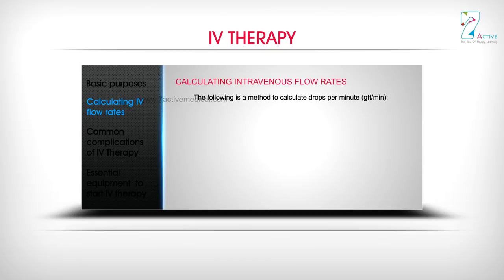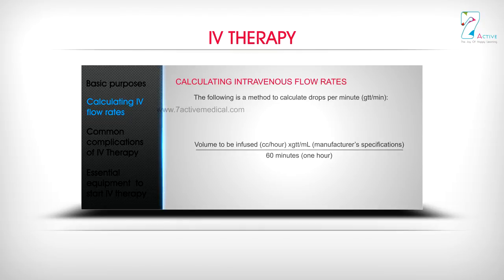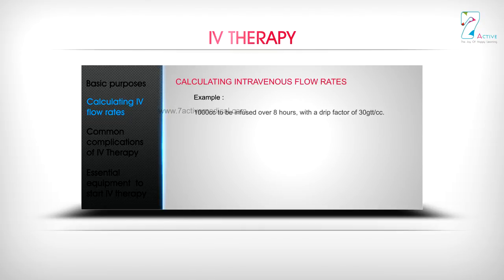The following is a method to calculate drops per minute. Correcting the flow rate when the amount needs to change: 6 mL with a drip factor of 60 gutta per hour.